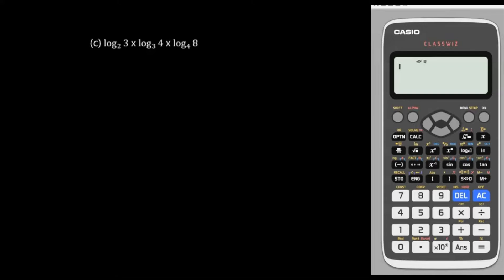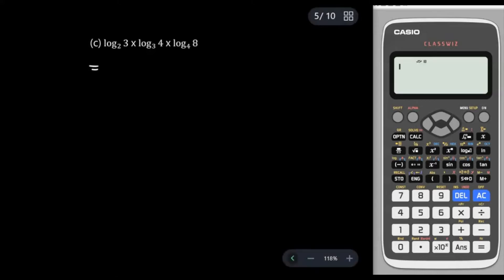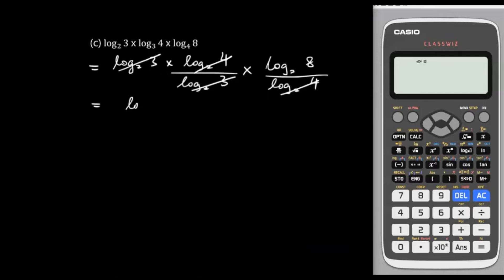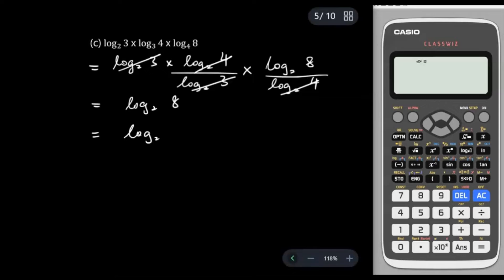Let's look at this question. We have log base 2, base 3, and base 4, with the numbers 3, 4, and 8. Since 4 and 8 can be changed to base 2, I'll change all terms to log base 2. We see what we can cancel: after cancelling, what's left is log base 2 of 8. Since 8 is 2³, we bring down the power: 3 log₂2 = 3 × 1 = 3.